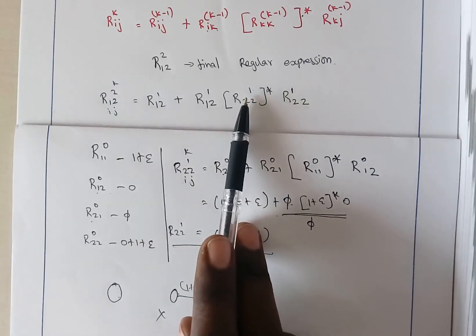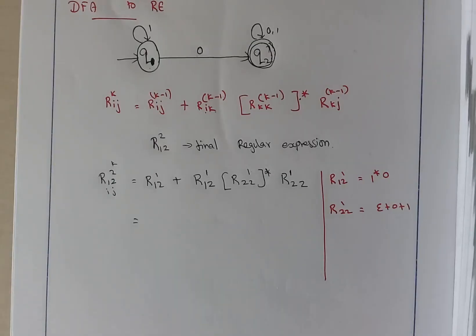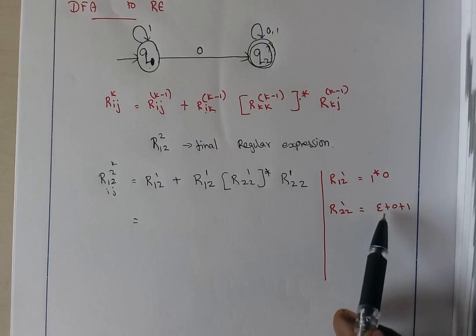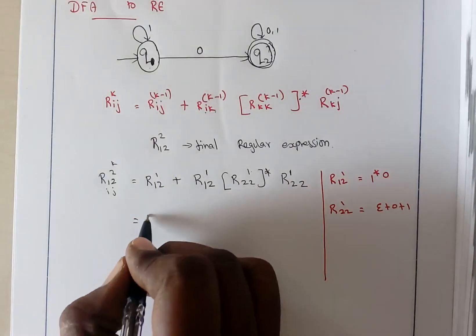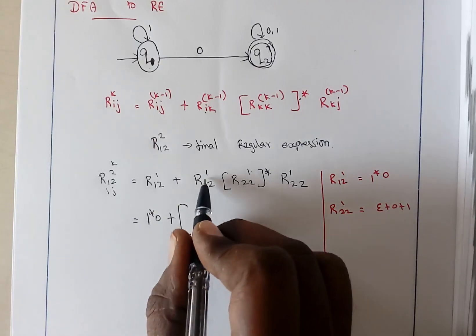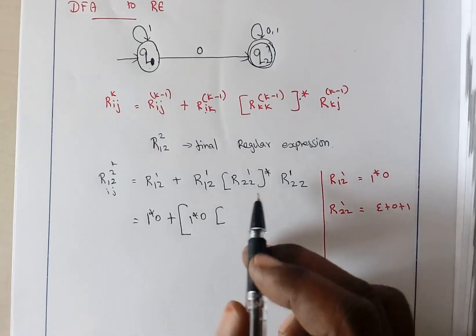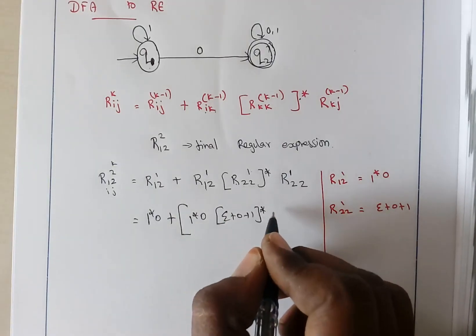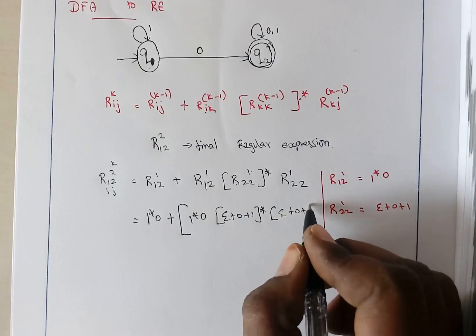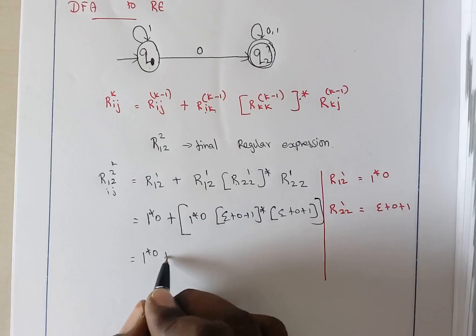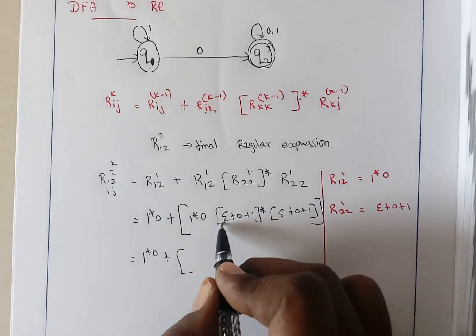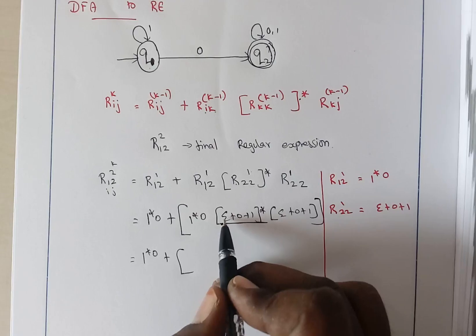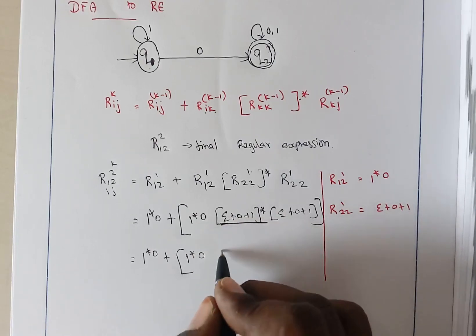Now we do direct substitution into the formula for R12 of 2. R12 of 1 is 1 star 0, and R22 of 1 is epsilon plus 0 plus 1. Applying in the formula: R12 of 2 equals R12 of 1 plus R12 of 1 concatenated with R22 of 1 star concatenated with R22 of 1, which gives: 1 star 0 plus 1 star 0 concatenated with (epsilon plus 0 plus 1) star concatenated with (epsilon plus 0 plus 1). Since the star already includes epsilon, we can simplify epsilon plus 0 plus 1 the whole star to just 0 plus 1 the whole star.